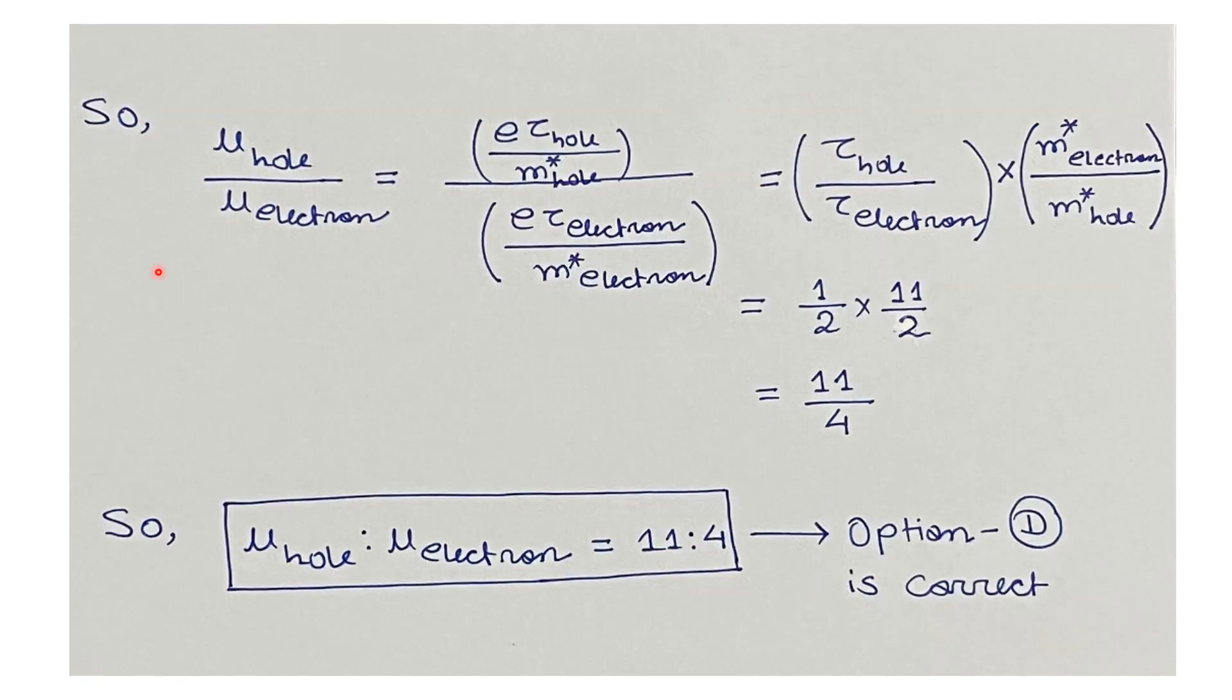Taking the ratio of mobility for holes to electrons: μ_hole/μ_electron = (τ_hole/τ_electron) × (m*_electron/m*_hole). From the question, τ_hole/τ_electron = 1/2 and m*_electron/m*_hole = 11/2. Multiplying these gives 11/4. Therefore, μ_hole:μ_electron = 11:4.